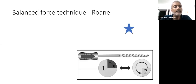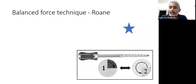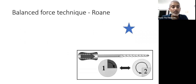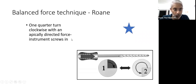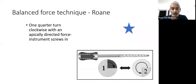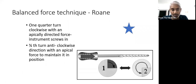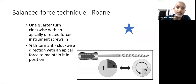To give you an idea, this is how we go about it. In instrumentation, they even ask about certain techniques like the balance force technique. Balance force technique was given by a person called Rohn. According to him, balance force technique has two parts: the first is a one-quarter turn clockwise with an apically directed force, and the second is an anticlockwise rotation where you give an apical force to maintain your instrument in position.